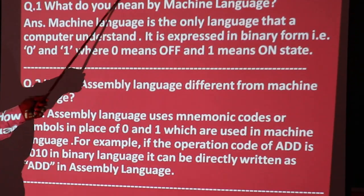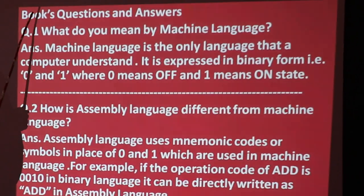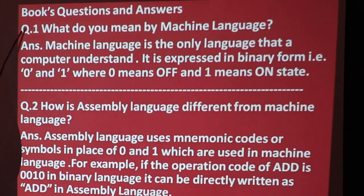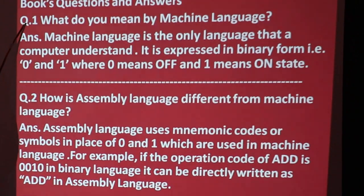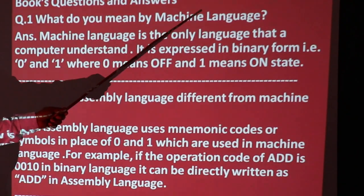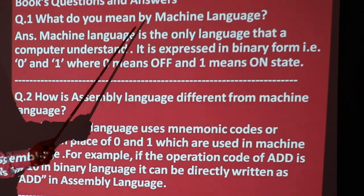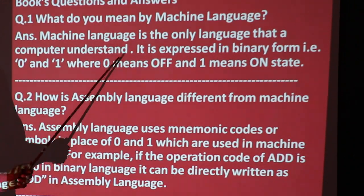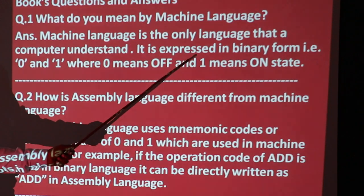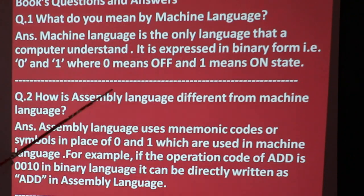Now these questions have been written here; you have to note them in your copy. Question number one: What do you mean by machine language? Machine language means a combination of zeros and ones — zero means off and one means on.